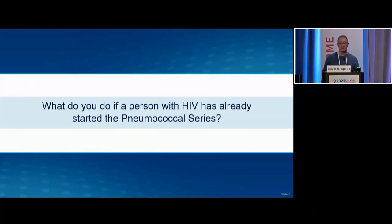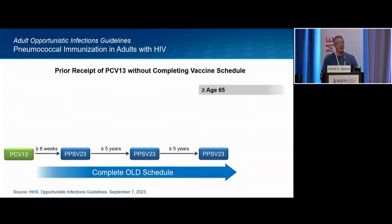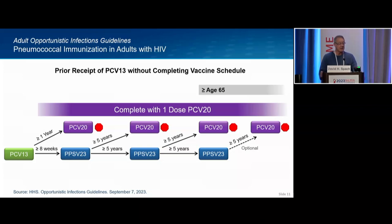The more relevant question for most of you: what do you do with patients who've already gotten some pneumococcal vaccine in the past? You have two options. First, the complicated route: complete the old schedule — wait eight weeks after PCV13, give polysaccharide, wait five years, give again, wait another five years, and give a final dose at age 65. Or, what I recommend and is now in the guidelines: one-and-done. At any point, give PCV20 and be done with pneumococcal vaccination.